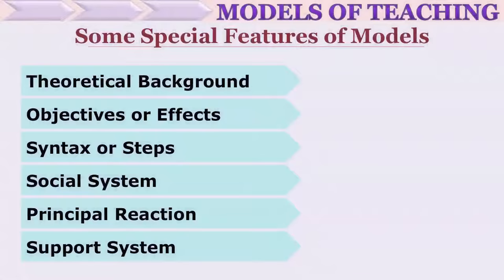But in what way are models different from methods of teaching? That is the peculiar characteristic of models of teaching. Every model has a theoretical background because, as we have seen, they are based on theory and research by some experts. That is why every model provides a theoretical background. Then they have specific objectives, specific syntax, a social system in which the model will be successful, and certain principles of reaction.